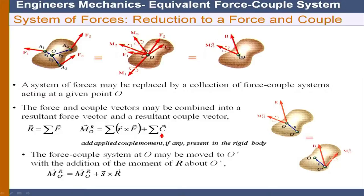This system can be further moved to some other point O prime. The resultant R comes to O prime, but there is also an additional moment component S cross R. So the net moment at O prime becomes M_R_prime equals M_R plus S cross R. Therefore, the system can be moved anywhere, and each time the original system and the moved system remain equivalent to each other.